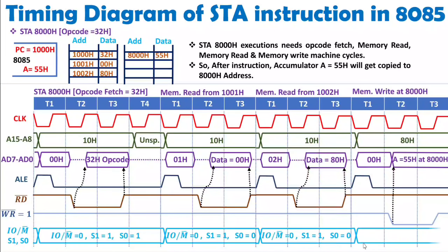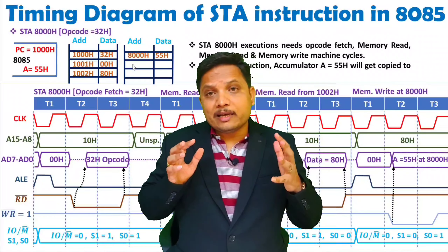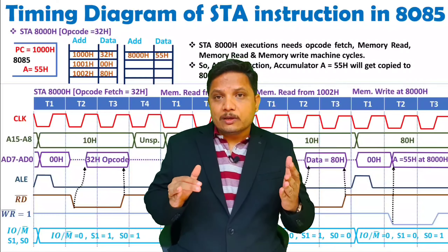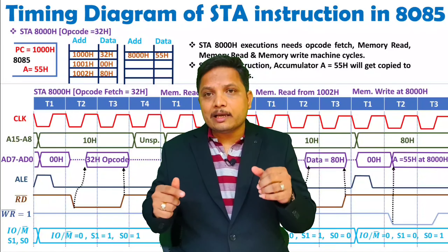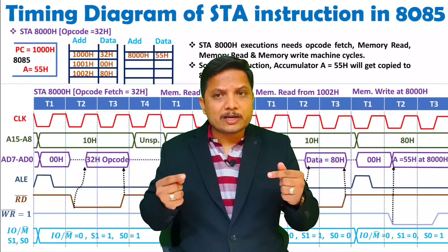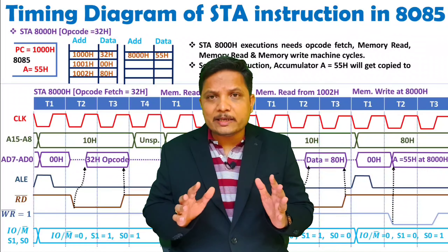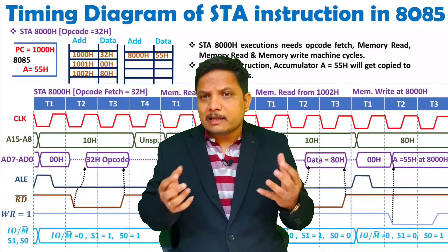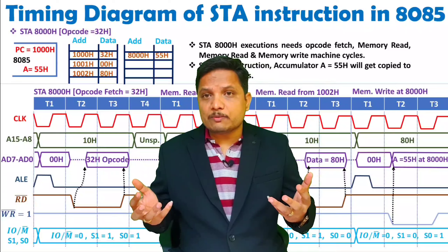For control signals during memory write: IO/M̄ is 0 (memory operation), and S1, S0 is 0, 1 for write operation. That is how, step by step, you can understand what is happening inside the microprocessor along with the timing diagram. I hope it is now clear how to use the STA instruction in programming and how to plot its timing diagram. You just need a little practice. Thank you so much for watching this video.